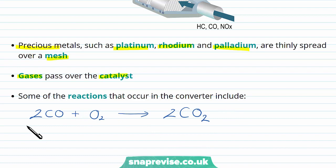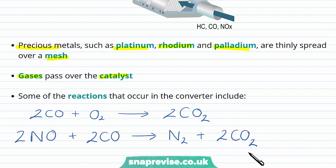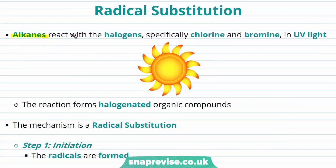Alkanes are able to react with halogens — specifically chlorine and bromine in UV light. The reaction forms halogenated organic compounds, and the mechanism of this reaction is a radical substitution reaction. We'll take a look at the three steps of initiation, propagation and termination.